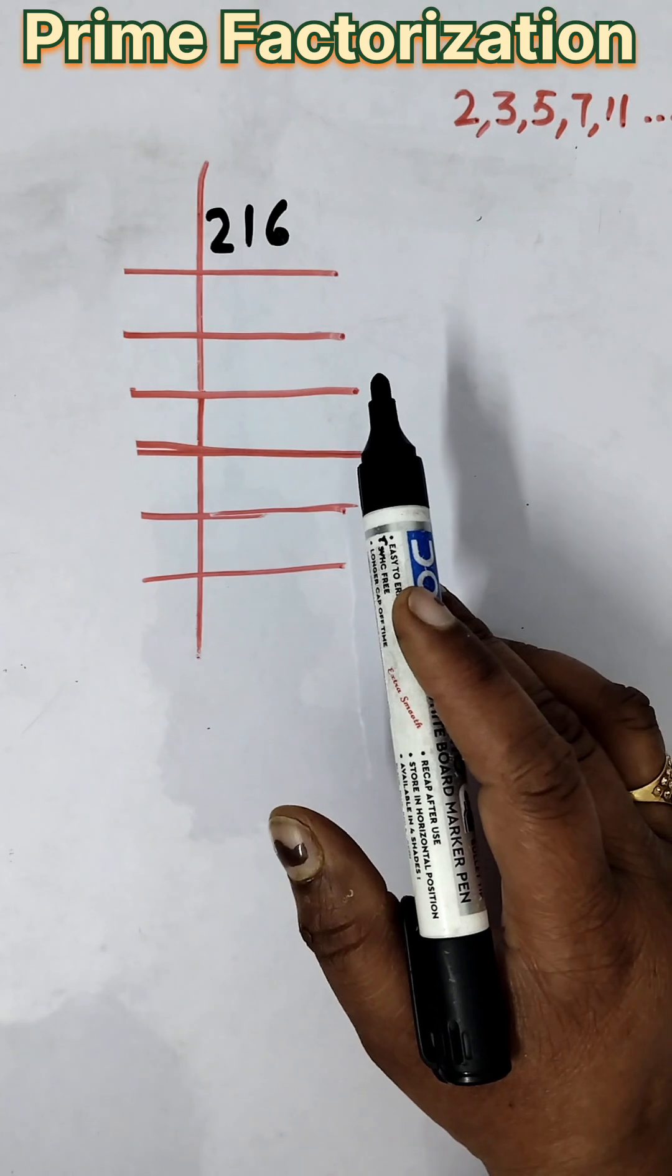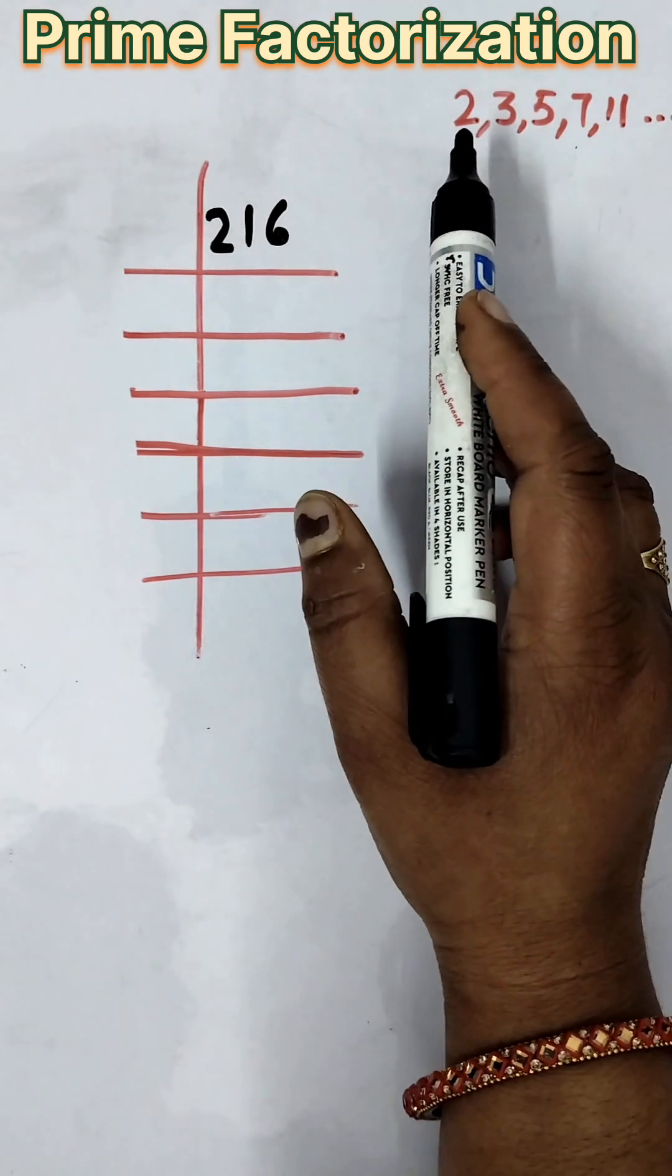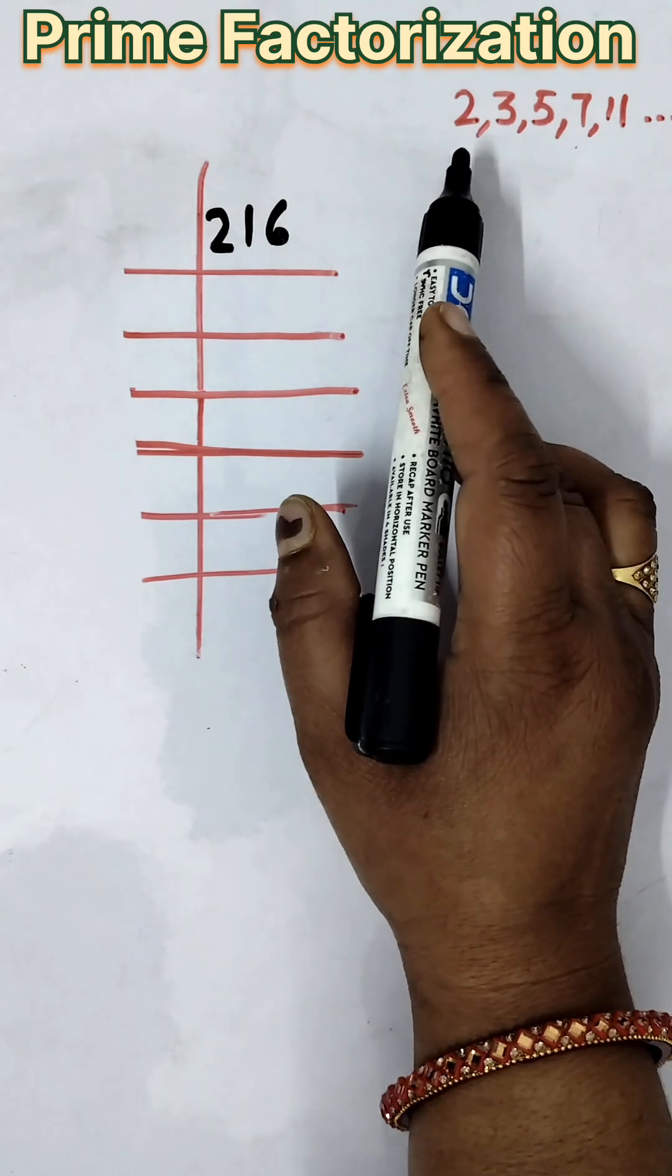First of all, we will choose the prime number. If we have prime factorization, if we divide the prime number, then we will do it by small number.